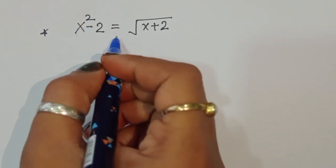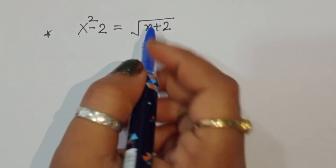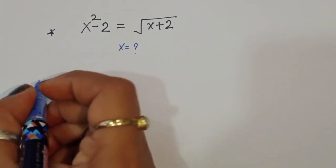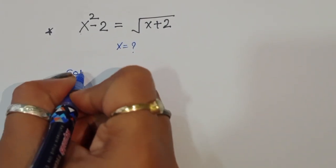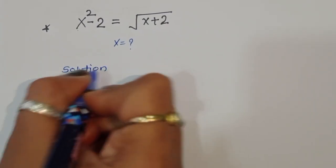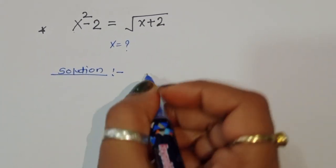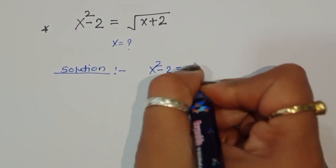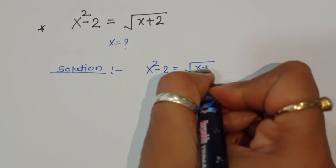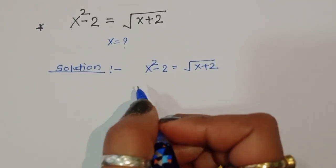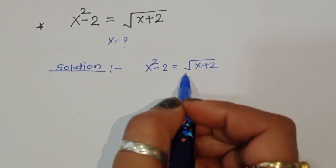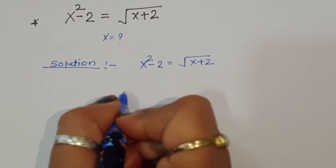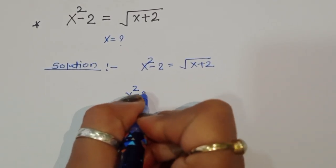The question is: given x squared minus 2 is equal to square root of x plus 2, we have to find the value of x. To cancel this square root, we can take square on both sides.